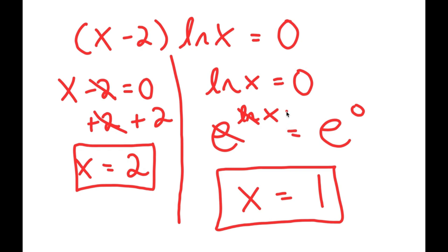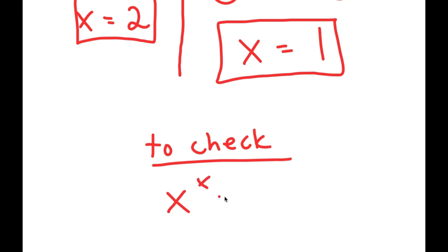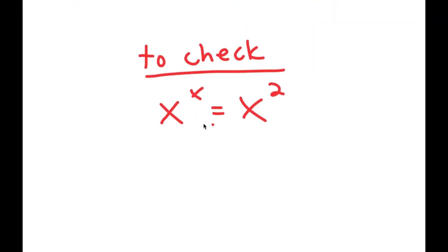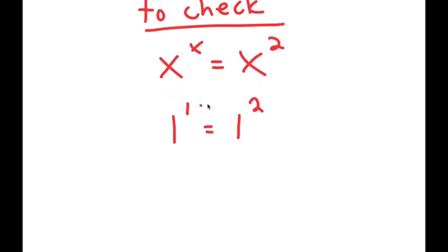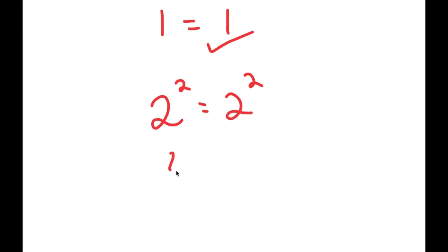Now that I have two solutions, I'm going to check to see if these are correct. My equation is x to the power of x equals x to the power of 2. Checking x equals 1: 1 to the power of 1 equals 1 to the power of 2, which is 1 equals 1 — correct. Checking x equals 2: 2 to the power of 2 equals 2 to the power of 2, which gives 4 equals 4 — correct as well.